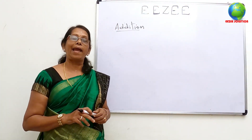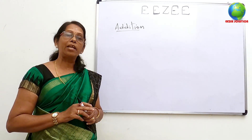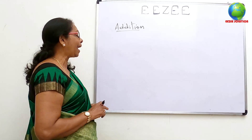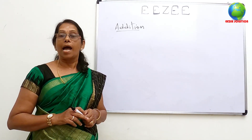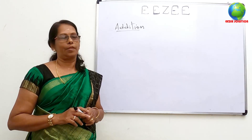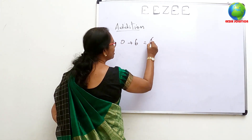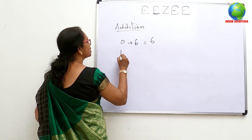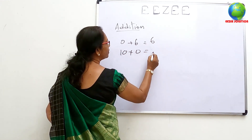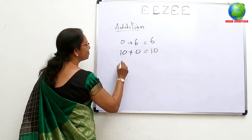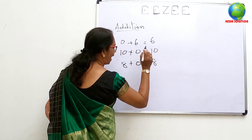In addition, one thing — if you are going to do the same method, that is the same method. Now, 0 plus 6, that is 6. 10 plus 0, that is 10. 8 plus 0, that is 8.